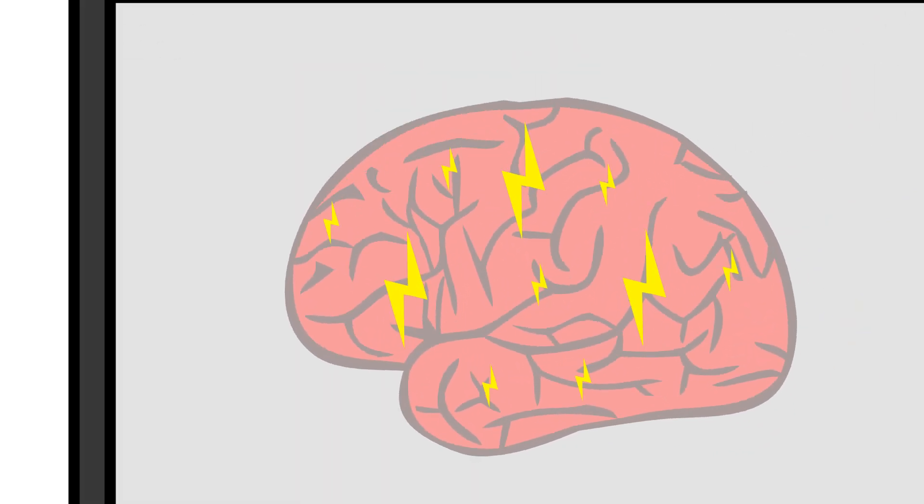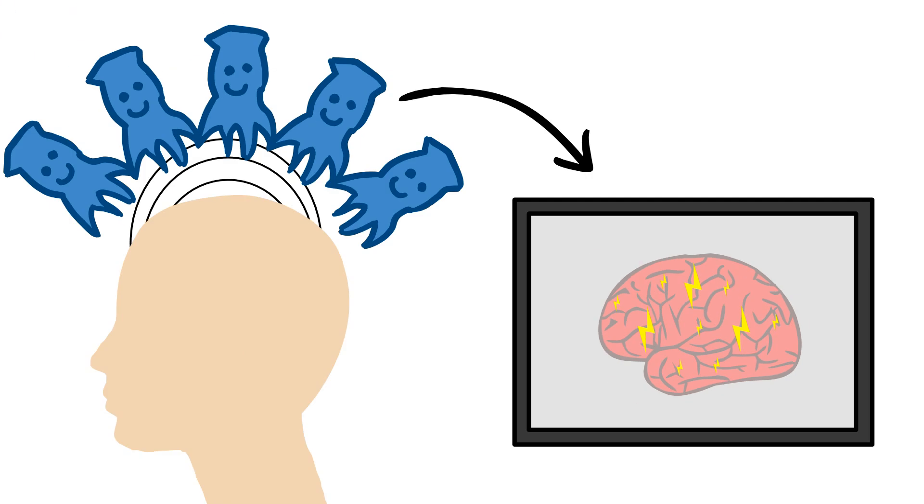MEG has a lot of advantages as a brain imaging technique, and because of these advantages it's widely used in research and diagnosis, where it can show which bits of the brain are active when people do different things, and which parts of the brain aren't working in patients.